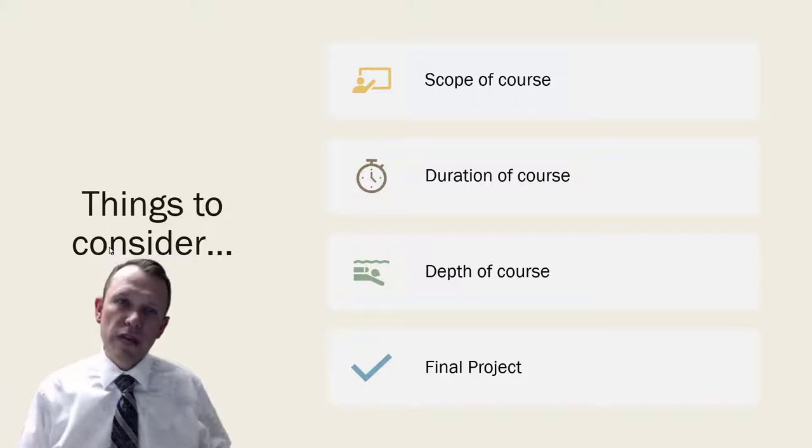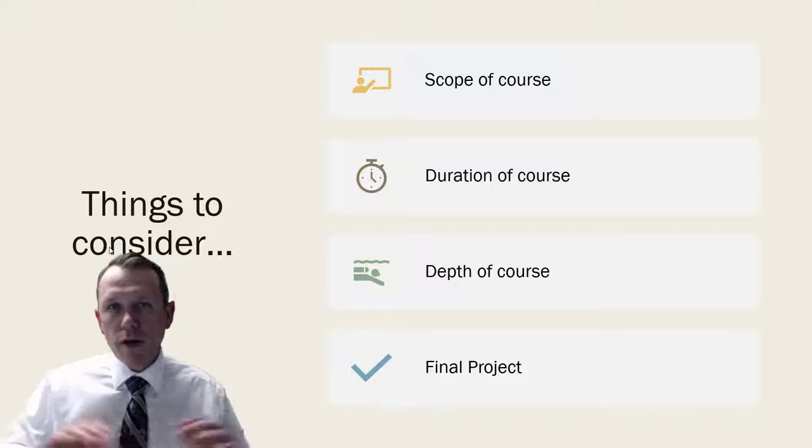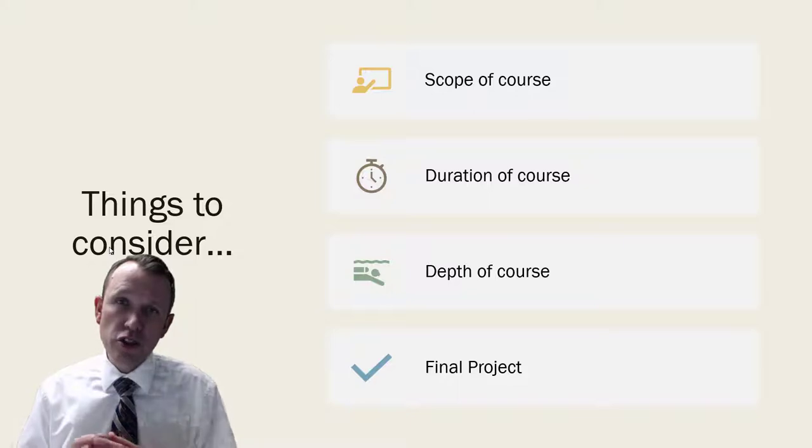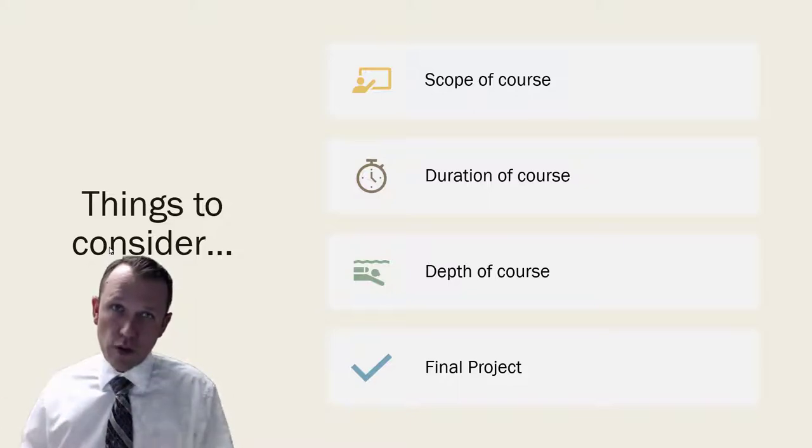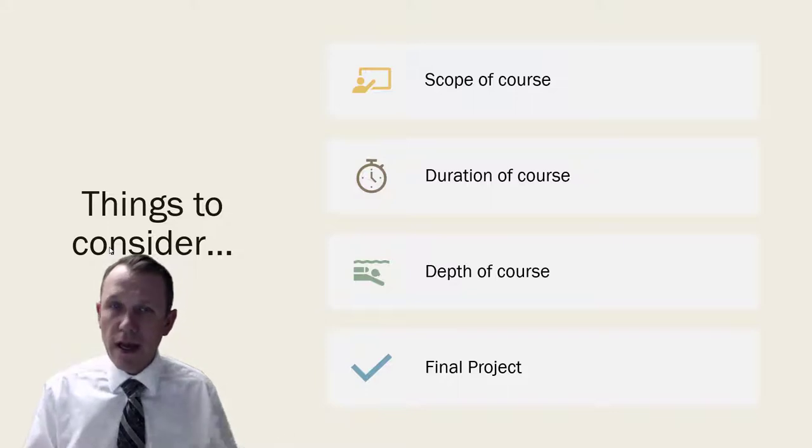The first thing is the scope of the course - that basically means what are the topics that we're going to cover in the course, and does your scope for your course have to match exactly the scope for the college course? The next thing is the duration of the course, and how that matches up with the college course as well.